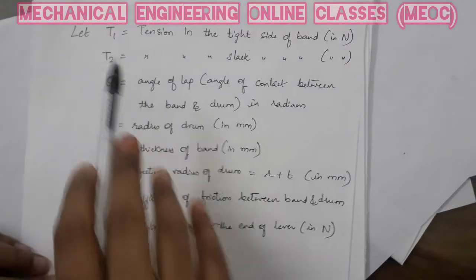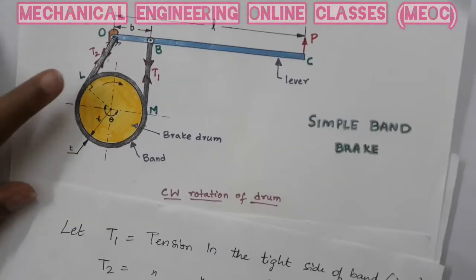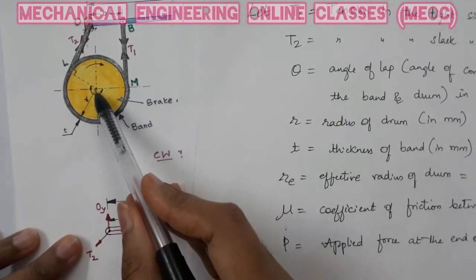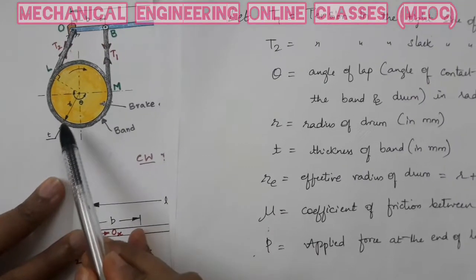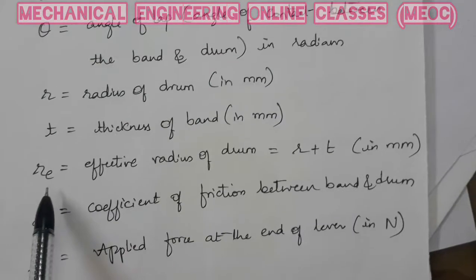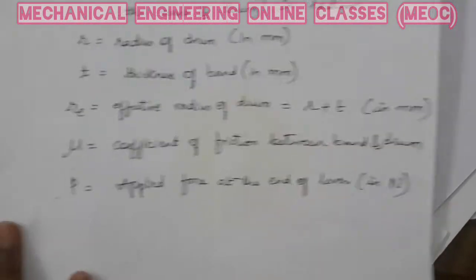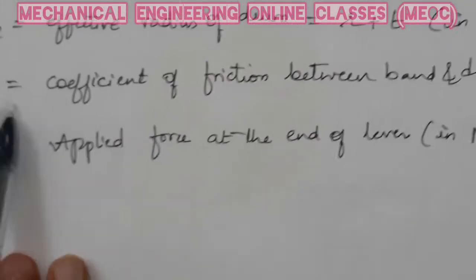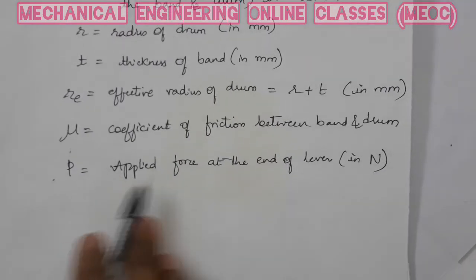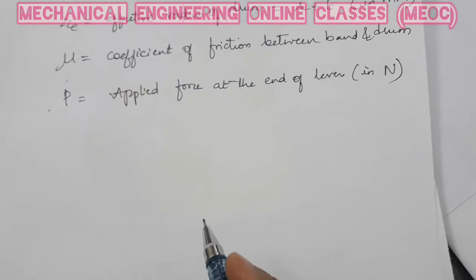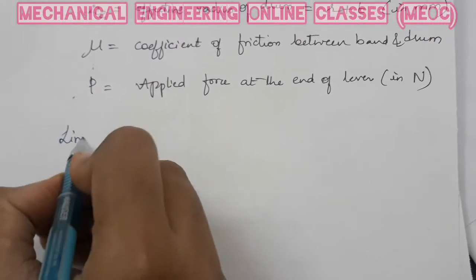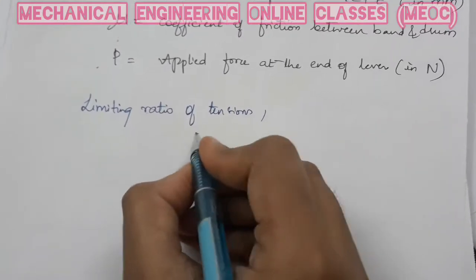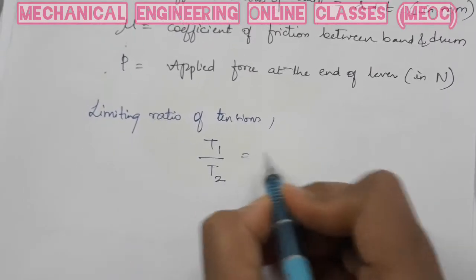Let us write down all the terms. T1 and T2 are the tensions in the tight and slack sides of the band. Theta is the angle of lap. R is the radius of the drum, and T is the thickness of the band. Re is the effective radius of the drum, which is the radius of the drum plus the thickness of the band, R plus T. Mu is the coefficient of friction between the band and the drum, and P is the applied force at the end of the lever. From the concept of belt drives, the limiting ratio of tensions is T1 divided by T2 equals e to the power mu-theta.